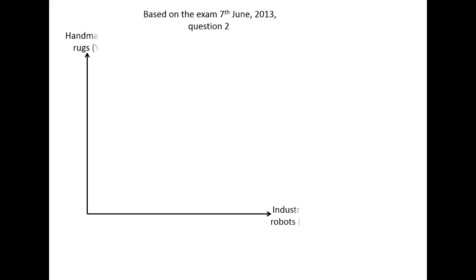In this film I will try to explain the Heckscher-Ohlin theorem, using an exam question from the 7th of June 2013 as a base. We are looking at two different countries, Sweden and Morocco, and two different goods: industry robots and handmade rugs. Since handmade rugs are obviously labor-intensive, we can make the assumption that industry robots are the capital-intensive good, based on the fact that we normally use industry robots to produce more industry robots.